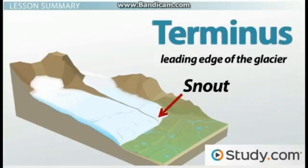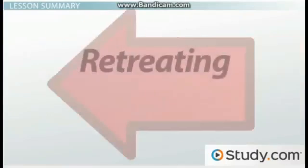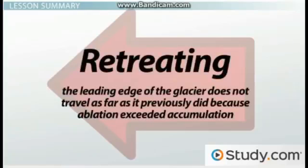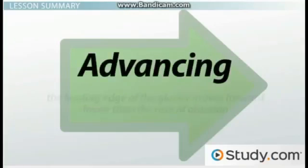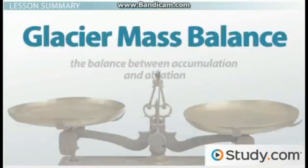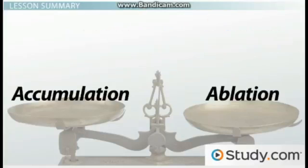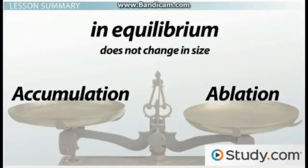By knowing the location of the terminus, scientists can determine if a glacier is retreating or advancing. Retreating means the leading edge of the glacier does not travel as far as it previously did because ablation exceeded accumulation. Advancing means the leading edge of the glacier moves forward faster than the rate of ablation. The glacier mass balance is the balance between accumulation and ablation. If there is equal balance, a glacier is said to be in equilibrium and does not change in size.